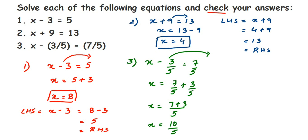I'm leaving x as 10/5 without canceling to 2, because I want to substitute it directly in the verification step — substituting 10/5 makes checking easier since we have matching denominators.